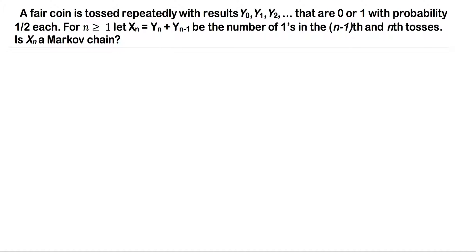A fair coin is tossed repeatedly with results y0, y1, y2, etc., that are 0 or 1 with probability 1/2 each. For n ≥ 1, let xn = yn + yn-1 be the number of 1's in the (n-1)th and nth tosses. Is xn a Markov chain?